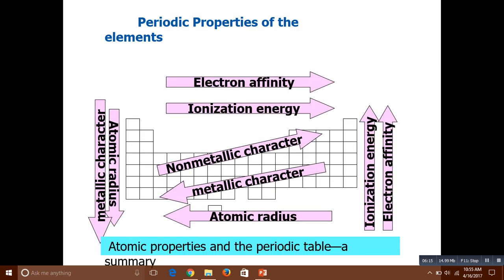This is the modern periodic table of elements. Electronegativity and ionization energy increase from left to right, while ionization energy and electronegativity decrease from top to bottom. Atomic radius and metallic character increase from top to bottom, and atomic radius increases from right to left.